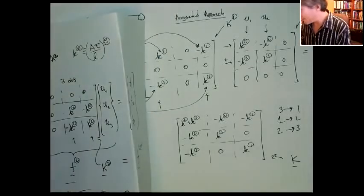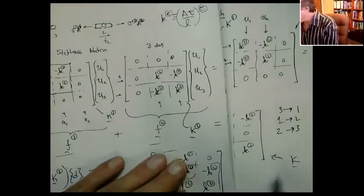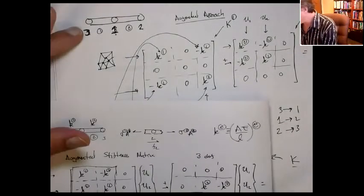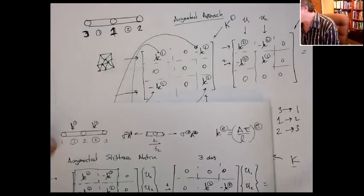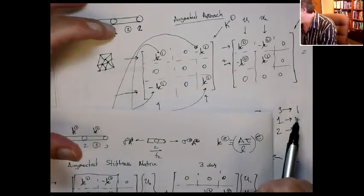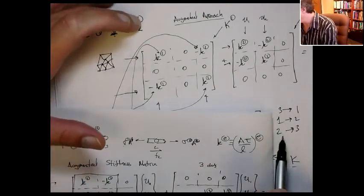All right. So sorry about that. But again, if we were to look at the renumbering, just to review, if we renumber from the second mesh to the first mesh, what was 3 becomes 1, what was 1 becomes 2, and what is 2 becomes 3.